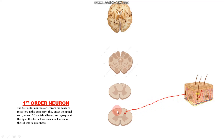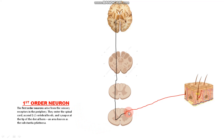Here, the first order neuron synapses with the second order neuron and transfers the sensory information of pain, temperature, crude touch, and pressure. The second order neuron then decussates — meaning it changes its direction from left to right or from right to left.